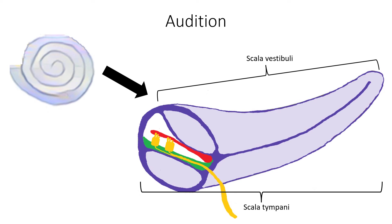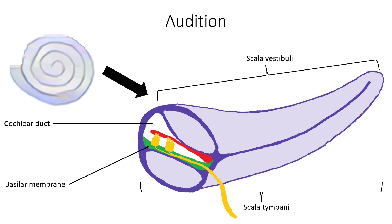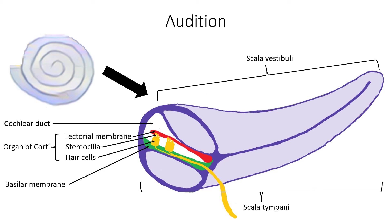In the middle, you will find the cochlear duct, which is the central cavity of the cochlea that contains the basilar membrane, organ of Corti, which is composed of hair cells, stereocilia, and tectorial membrane, onto which stereocilia are attached and arranged from the tallest to the shortest member.